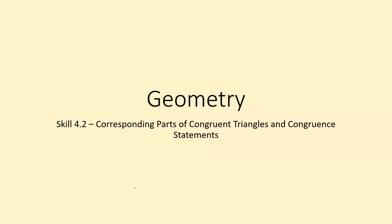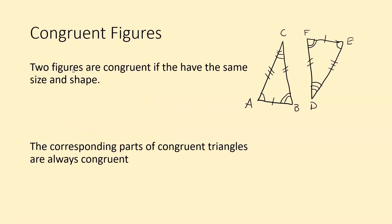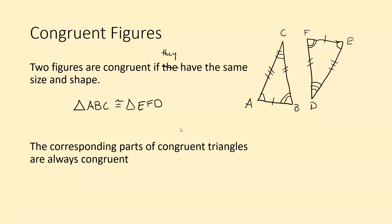Hello class, this is Mr. Sutton and today we're going to be talking about congruent triangles, corresponding parts of congruent triangles, and congruent statements. Congruent figures are two figures that are congruent if they have the same size and shape. We can see that these two figures are congruent because they have the same side lengths as well as the same angle measures — they are the same size and shape and both triangles.